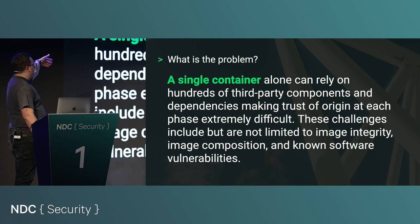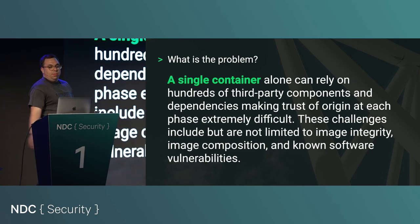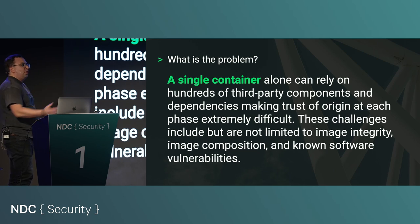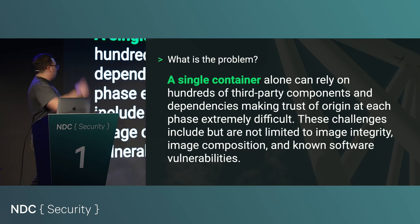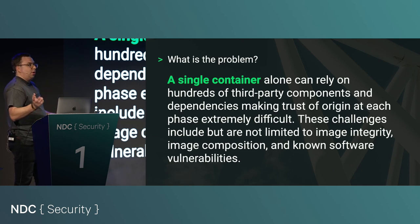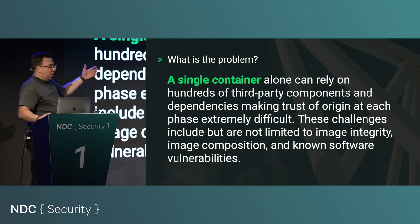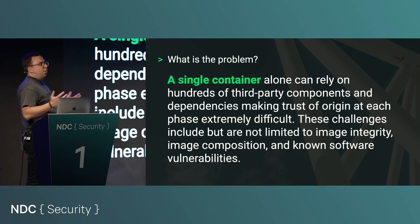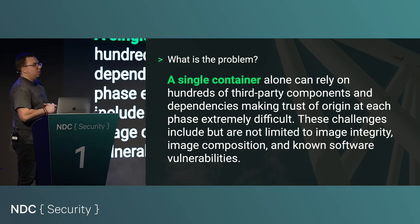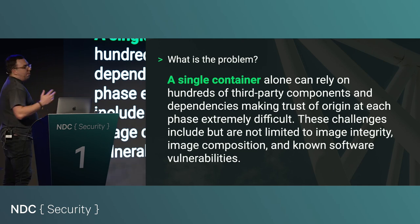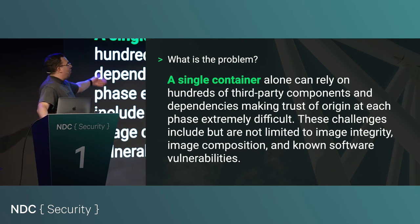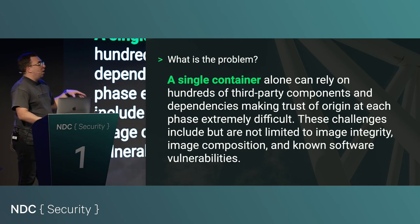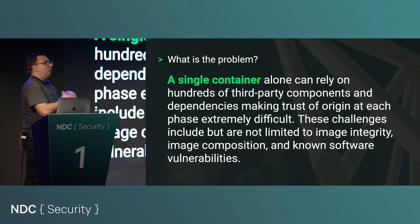Number two is supply chain vulnerabilities. A single container has hundreds of different third-party components. We pull images off the internet and just assume they're secure — even ones from registries we think are secure may not be. As an example, the first five to ten most-pulled Docker images on Docker Hub all have CVEs. We need a way to make sure that what we're running inside our Kubernetes cluster is actually validated.